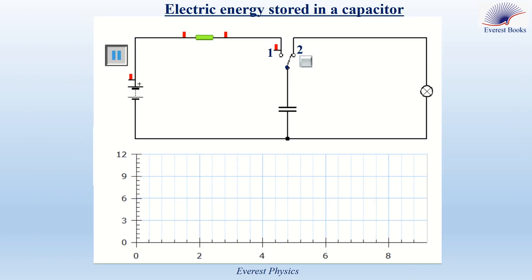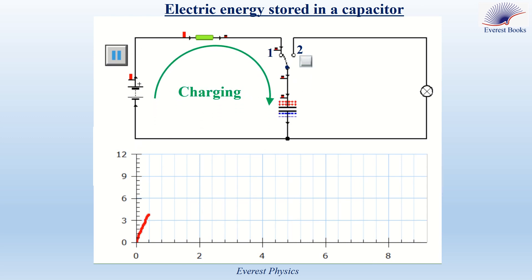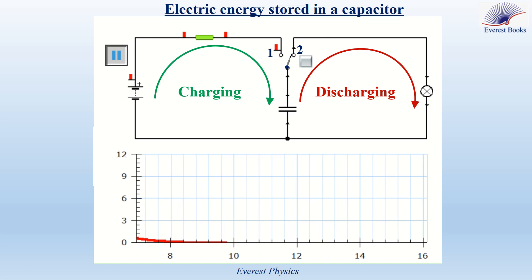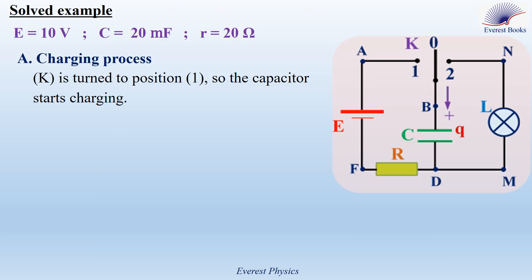The aim of this experimental simulation is to verify that a charged capacitor stores electric energy. Consider this circuit, which includes a battery, a resistor, a capacitor, a lamp, and an SPDT switch having one input terminal and two output terminals. The graph shows the voltage across the capacitor as a function of time. We start the simulation by turning the switch to position one. During charging, the voltage across the capacitor increases and becomes constant in the steady state. Turning the switch to position two, the lamp glows and the voltage across the capacitor decreases to zero during discharging — because the lamp receives electric energy from the capacitor. We conclude that the charged capacitor stores electric energy, and this energy depends on the voltage across its terminals.